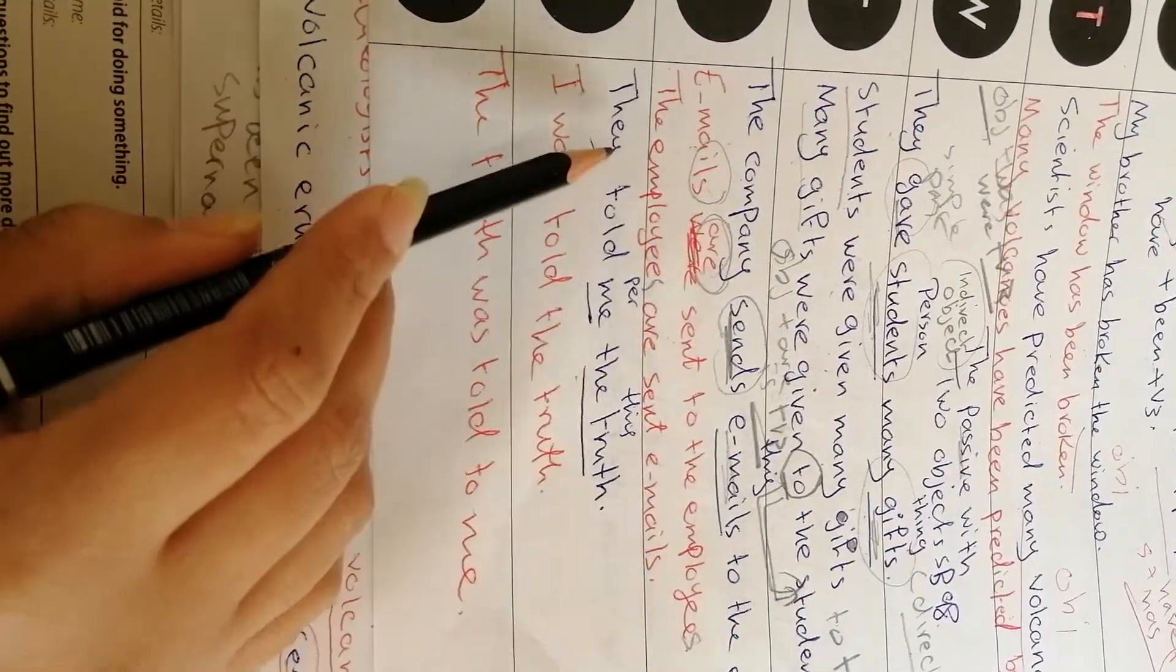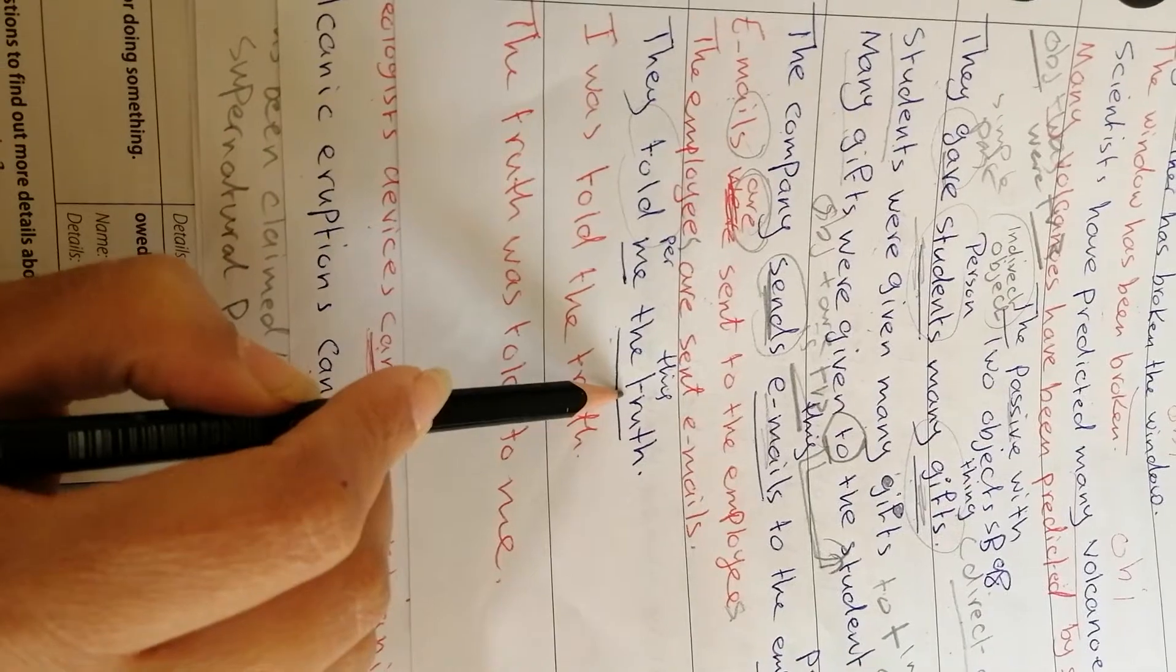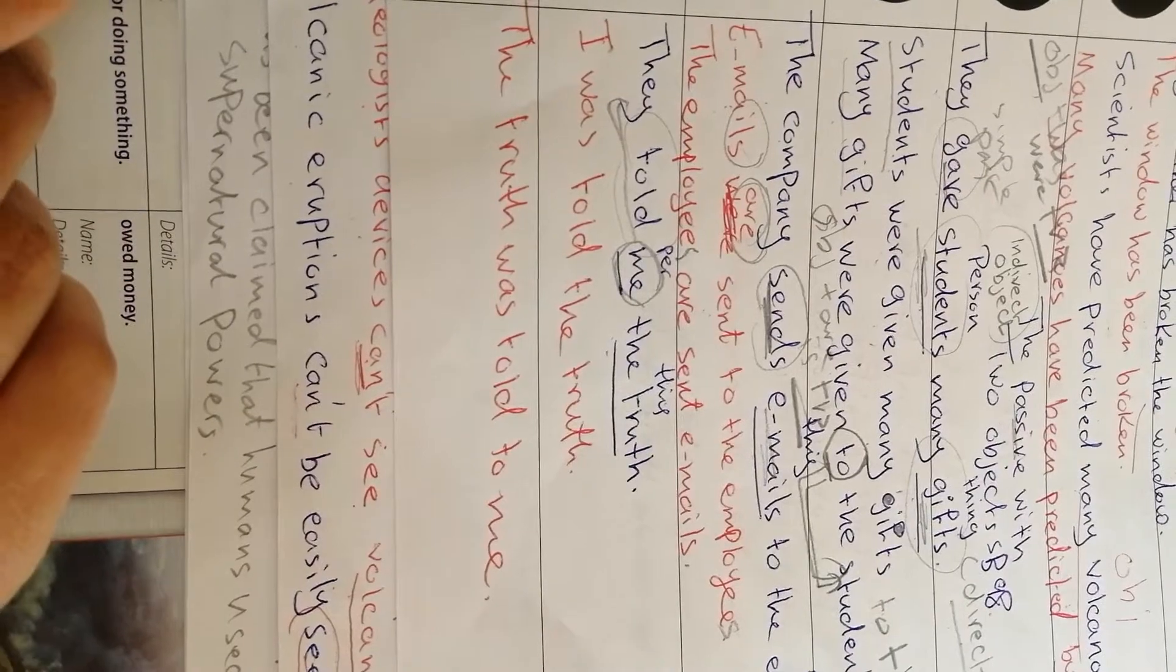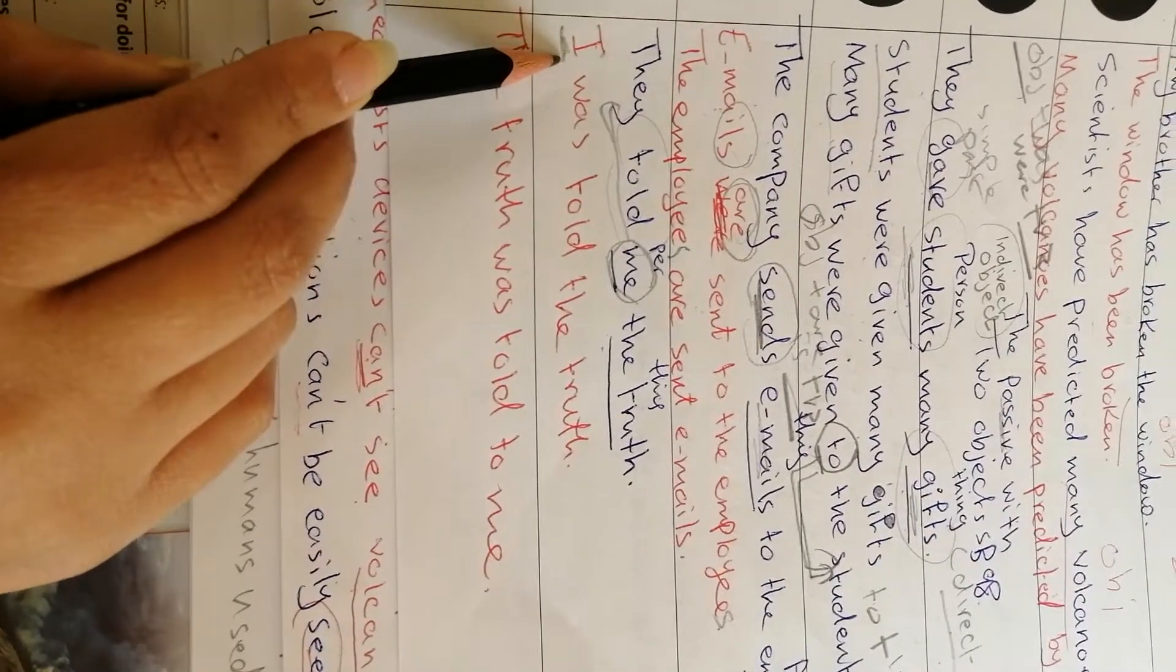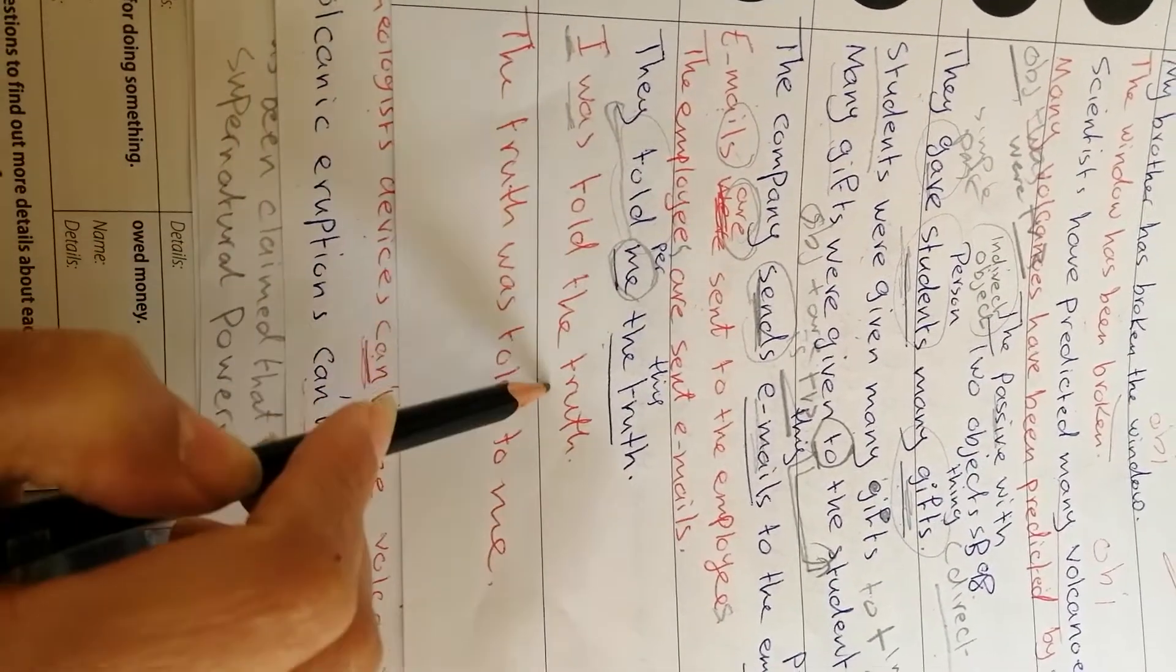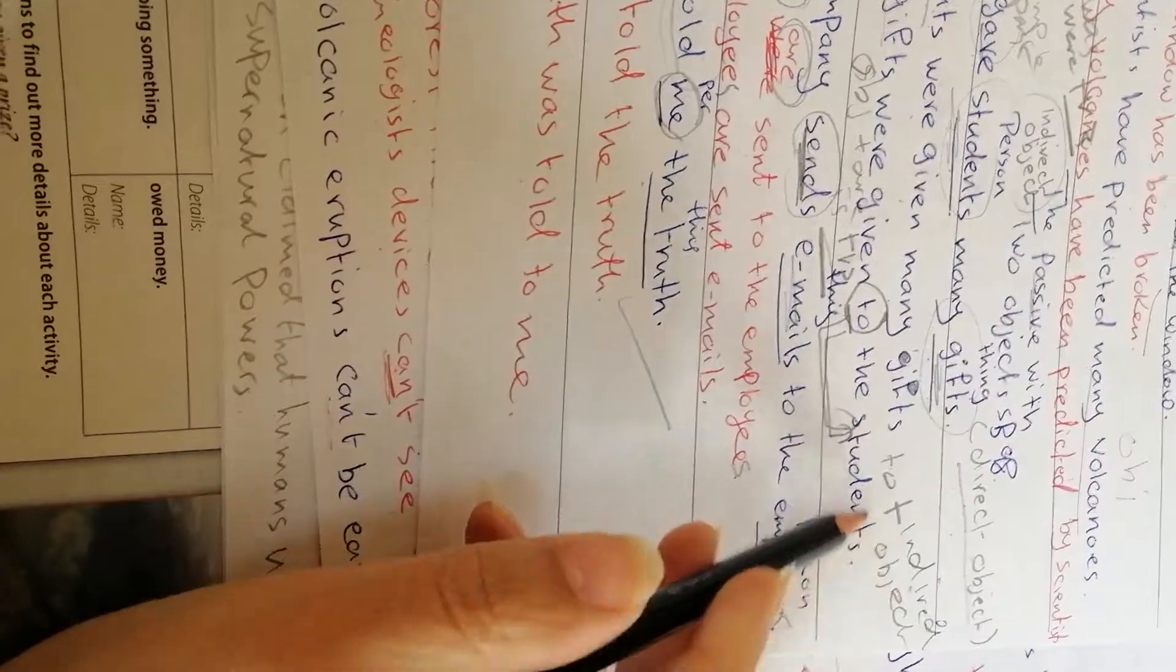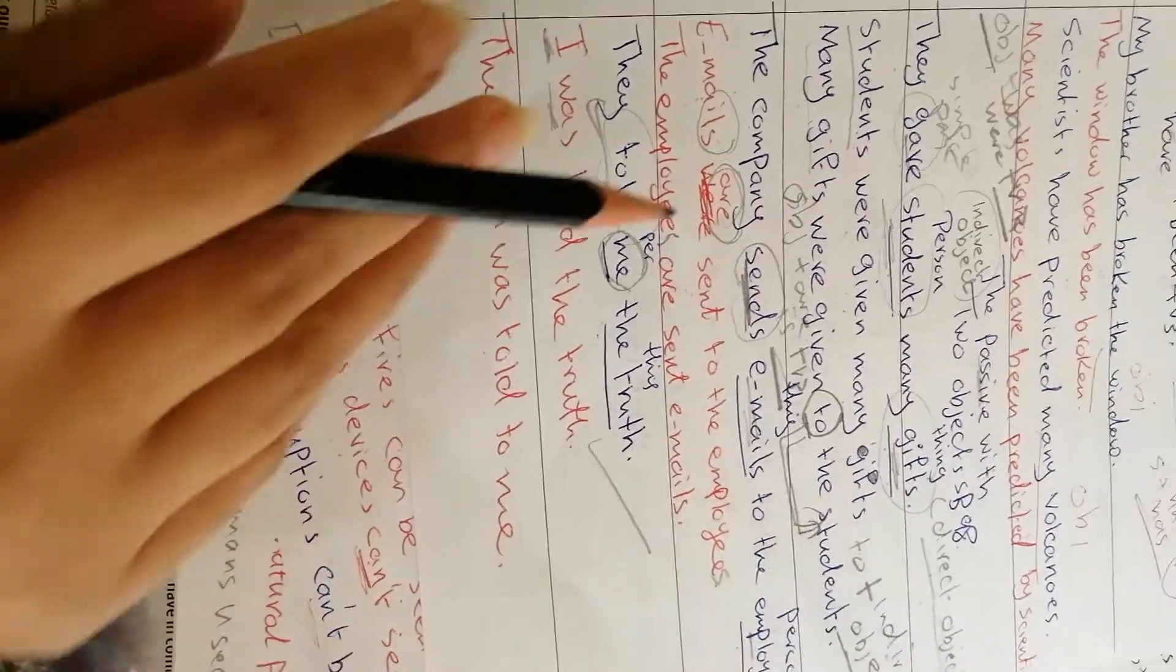They told me the truth. Tell is one of the verbs that takes two objects. They told the truth - direct object - to whom? To me. When I want to change me, because it's an object, I want to make it the subject of the sentence in the passive voice. I change me into I. I takes was because this is simple past. I was, verb 3 from told is told. I was told the truth. If I want to make another passive form: The truth was told to me.